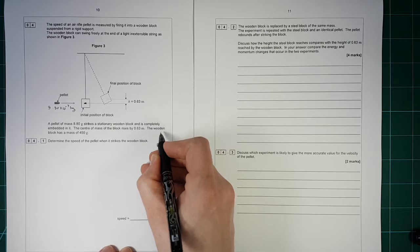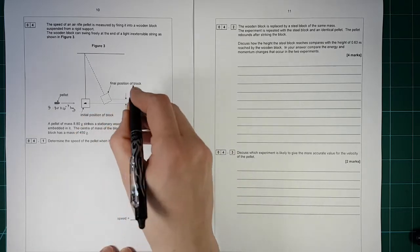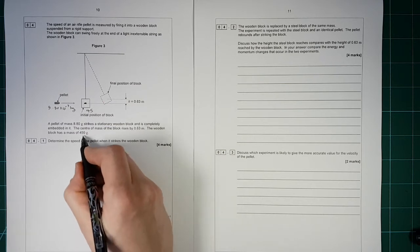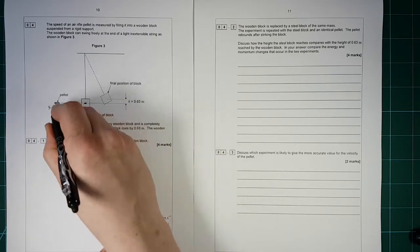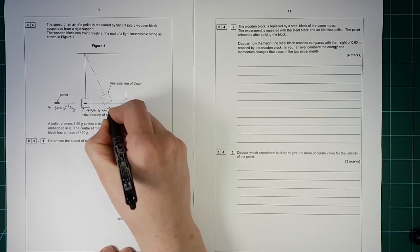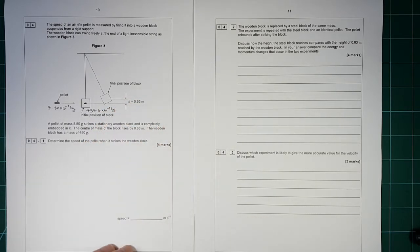So the mass of this wooden block then is 4.5 plus this because the pellet's inside it, so 8.8 times 10 to the minus 3 kilograms. Determine the speed of the pellet when it strikes the wooden block.